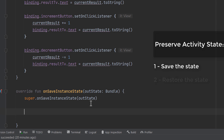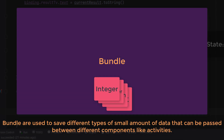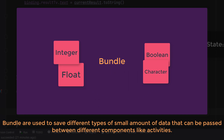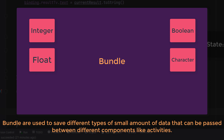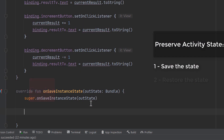We'll use the Bundle to save our data. The Bundle is a special class in Android used to save small amounts of data. Within the Bundle, there are fields corresponding to all the primitive types we know — integers, floats, characters, booleans, and so on. Additionally, you can put strings, Parcelable types, Serializable types, and even a whole Bundle inside it.